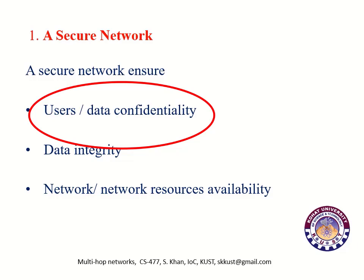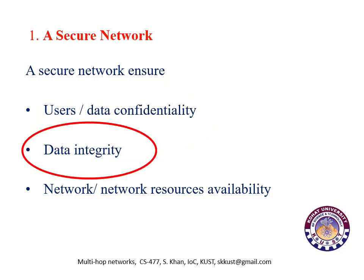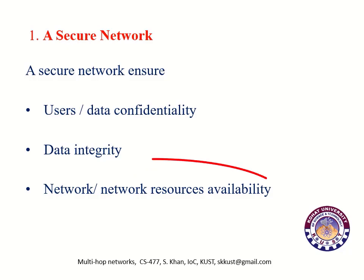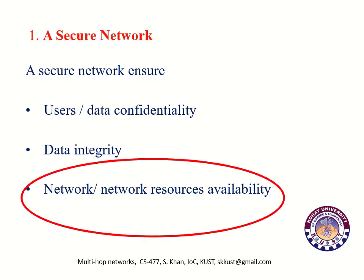A secure network does not expose the identity of senders and receivers. Number two, data integrity, which means that nobody is allowed to make changes in the data which is being transmitted from source to destination. Number three, network resources availability. A secure network ensures network resources availability, which means that network resources are always available to registered users or subscribers. Unauthorized users or attackers cannot deny network resources to legitimate users.